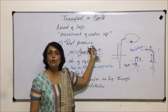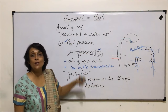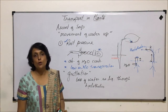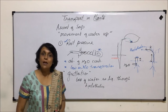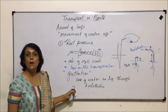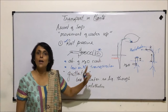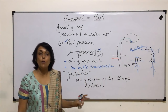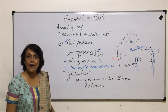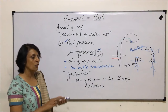One force which helps in the process of ascent of sap is root pressure, though it is not going to push water much higher. A few centimeters is what it can push the water up, which is sufficient for a herbaceous plant but not for a tall angiospermic plant. Let us see other factors responsible for these movements.